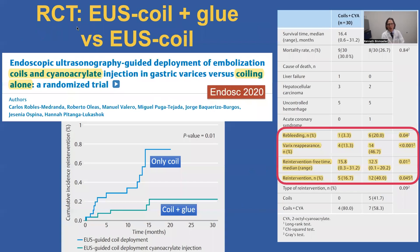We have another randomized controlled trial from Ecuador comparing EUS-guided coil and glue versus EUS with coils alone. The authors found that all four outcome categories were statistically significantly in favor of the coil and glue group: the re-bleeding rate was much lower, the varix reappearance rate was lower, the re-intervention-free time was significantly longer, and the re-intervention rate was lower.